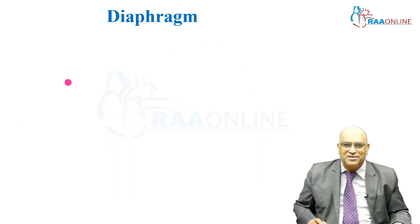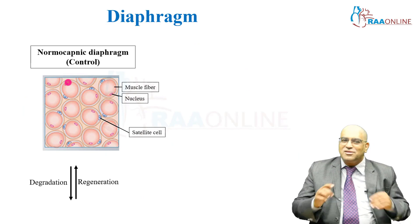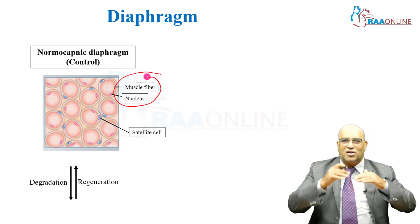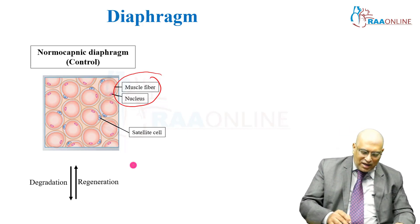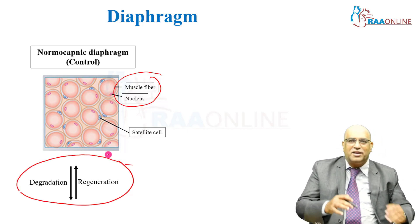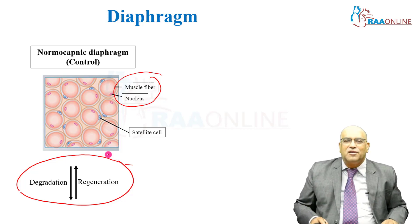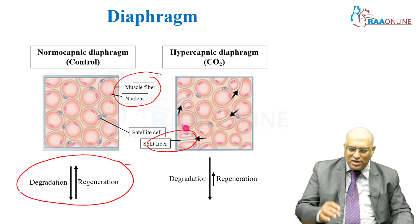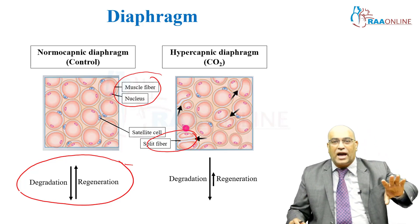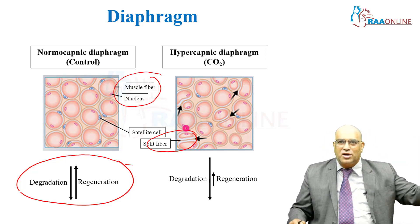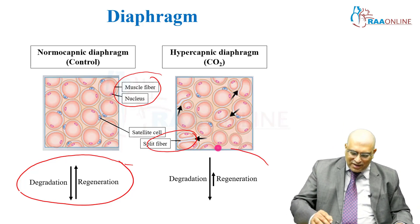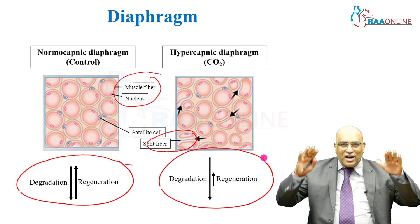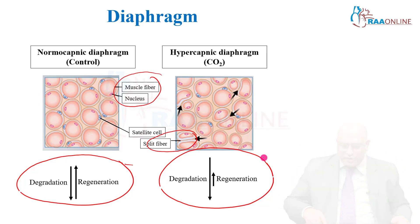Coming to the diaphragm, in a normal arrangement the muscle fibers and nucleus are arranged nicely and degradation and regeneration are equally balanced. With hypercarbia, the muscle fibers are split so contraction is not as effective, and the rate of degradation is more than regeneration. Thereby, the efficiency of the diaphragm is reduced.